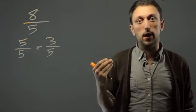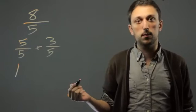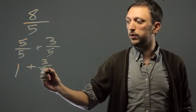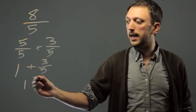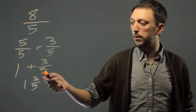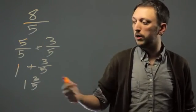What makes this helpful is that 5 over 5 is also known as 1. So, we have 1 plus 3 fifths, or 1 and 3 fifths, which is proper notation for a mixed fraction. That's how you simplify an improper fraction into a mixed fraction.